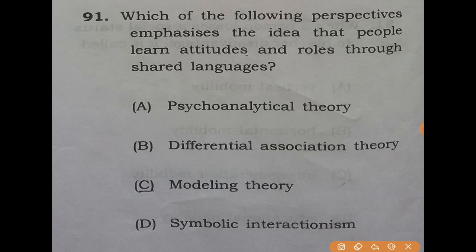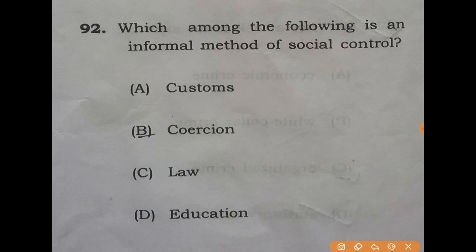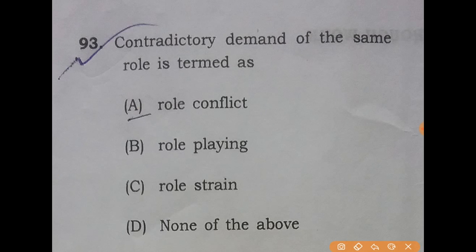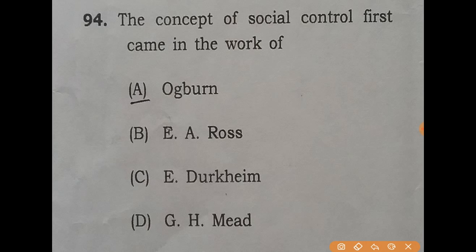Question 91: which of the following perspectives emphasizes the idea that people learn attitudes and roles through shared language? The answer is D: symbolic interactionism. Question 92: which of the following is an informal method of social control? The answer is A: customs. Question 93: contradictory demands of the same role is termed as — the answer is A: role conflict. Question 94: the concept of social control first came in the work of — the answer is B: E.A. Ross.